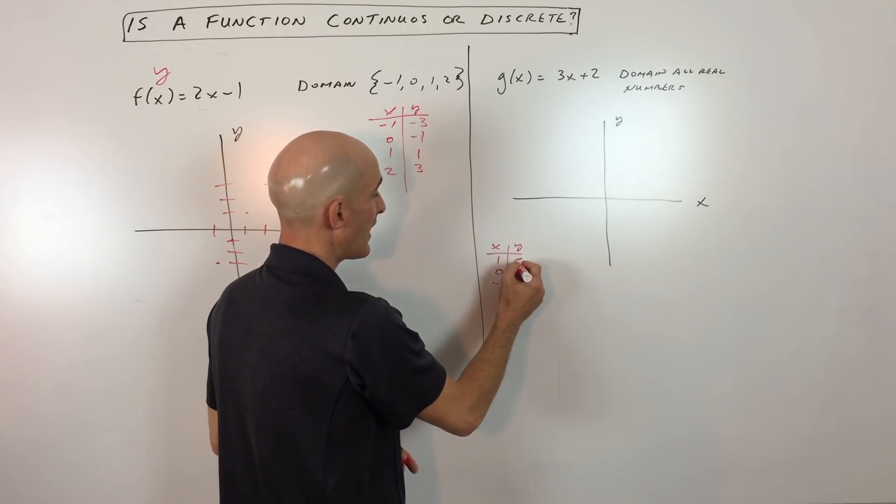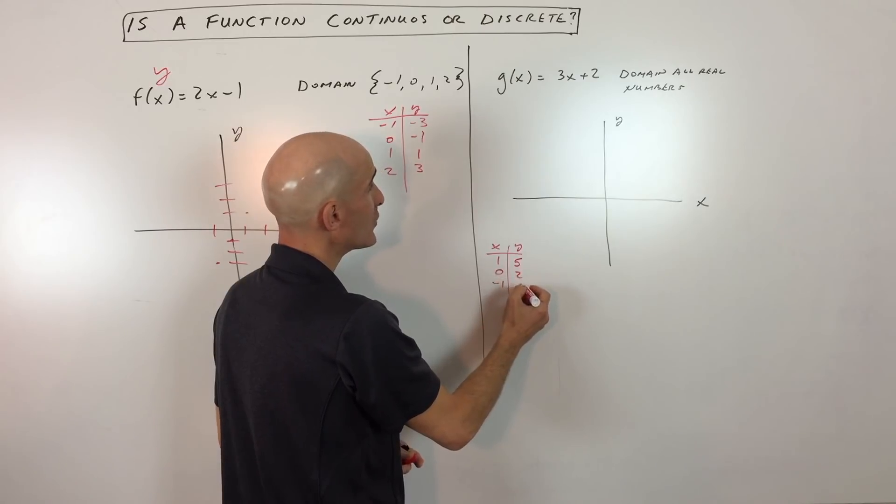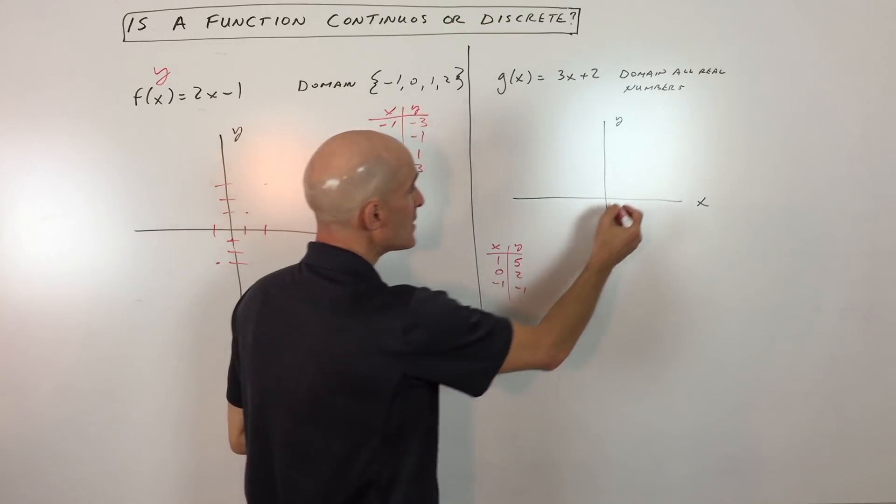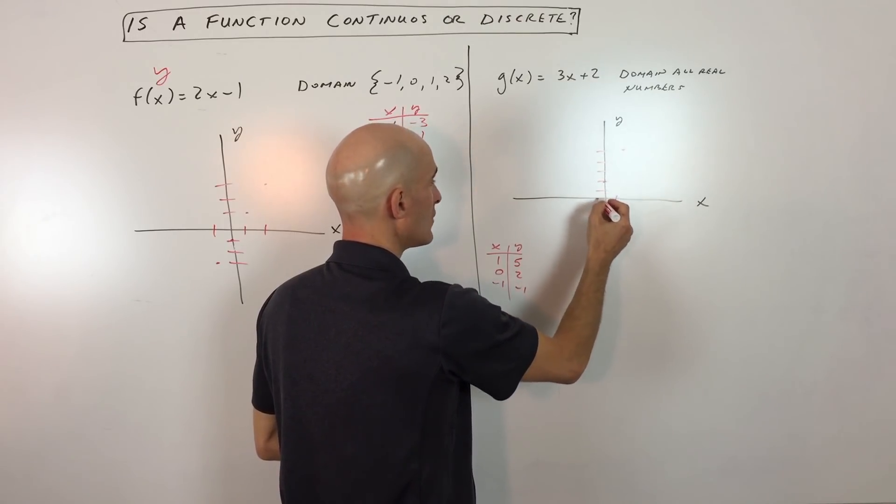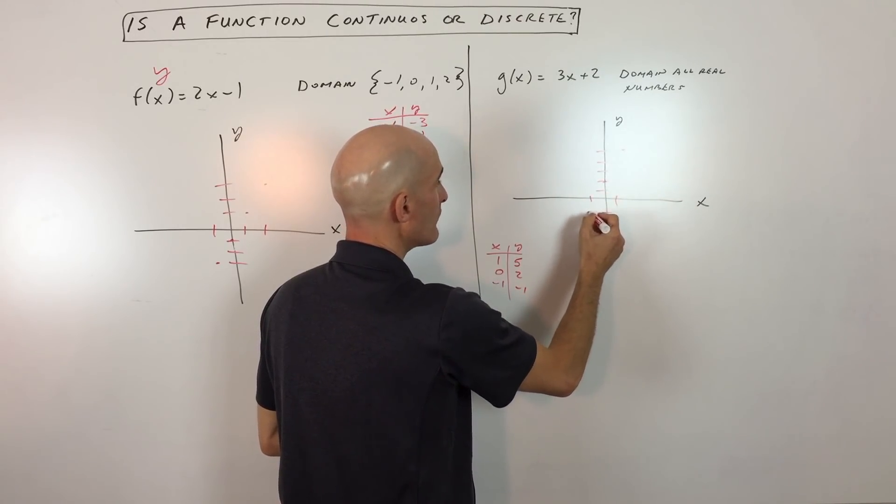So if we put 1 in we get 5. If we put 0 in we get 2. And if we put negative 1 in, we get negative 1. So let's just plot those points real quick here. We've got 1, 5, 0, 2, and negative 1, negative 1.